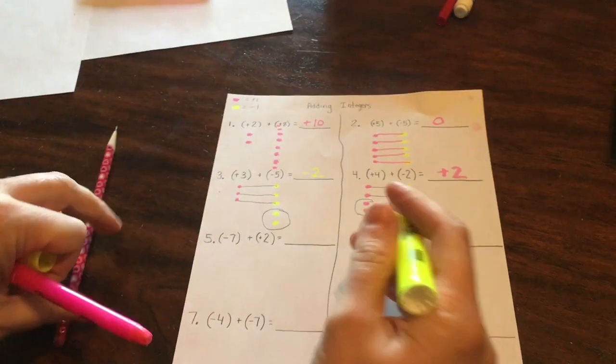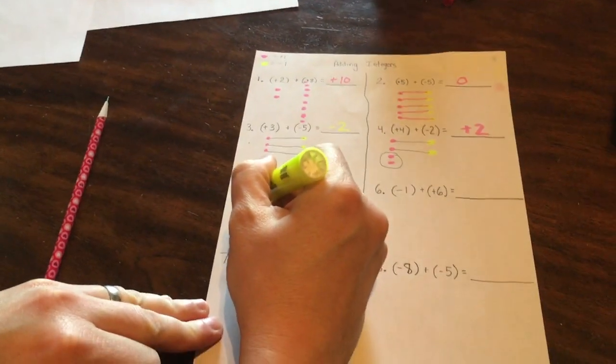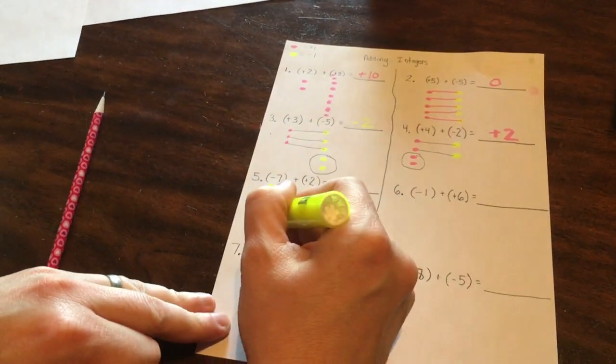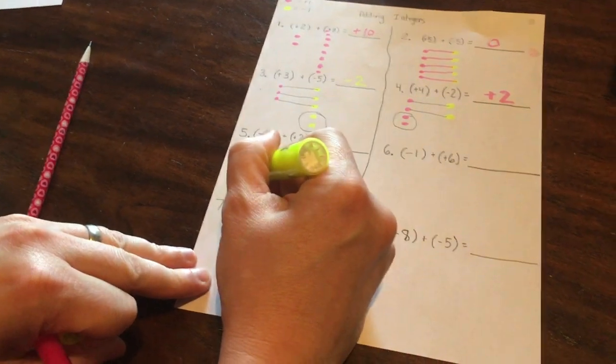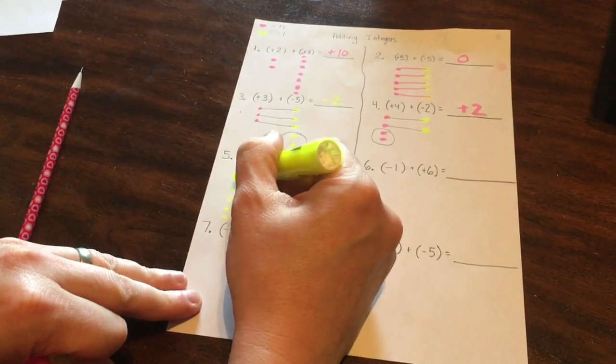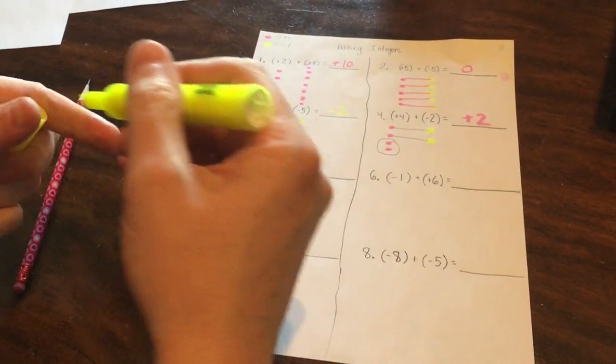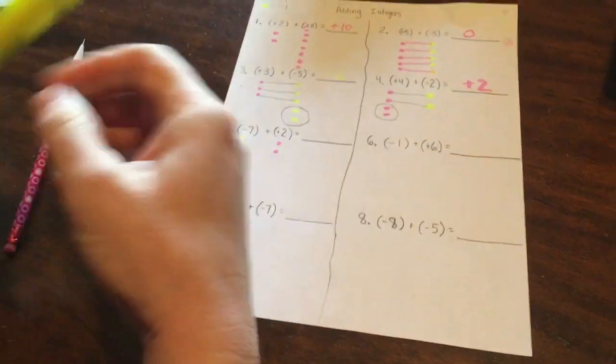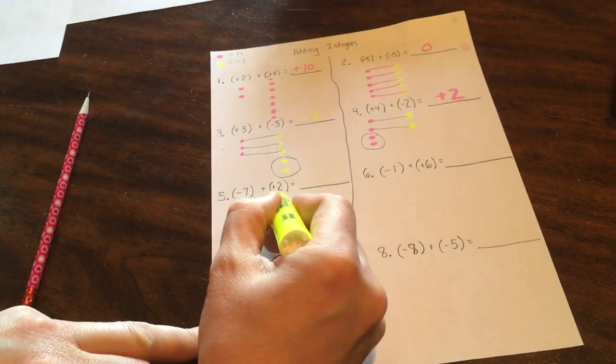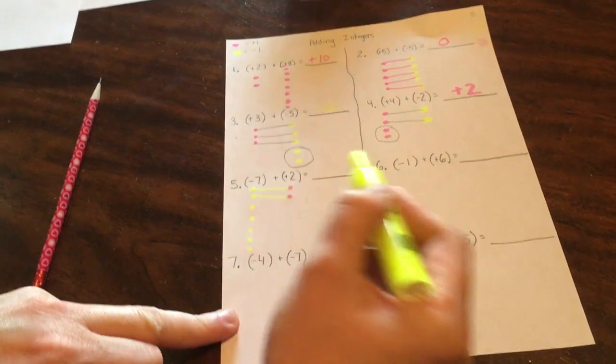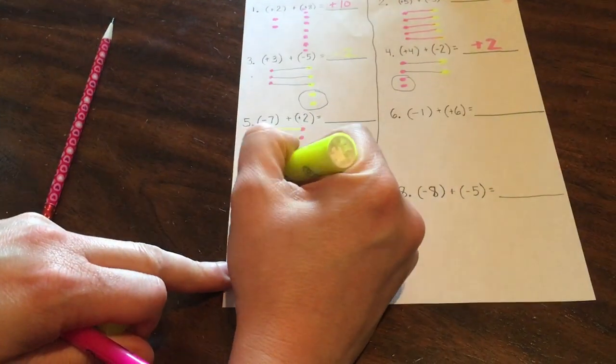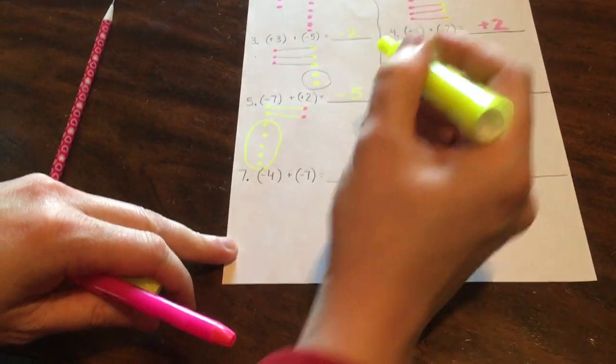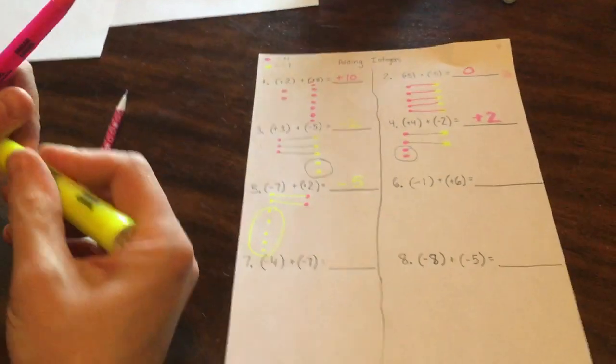All right. So here we go. And now we're getting into some of the more interesting ones. They will all work the same way. With adding, all you're doing is looking for zero pairs. That's seven negatives. There's my two positives. Then I pair them off because that's zero. That's zero. So what I have left here is five negatives. So I'd have negative five. So negative seven plus positive two.